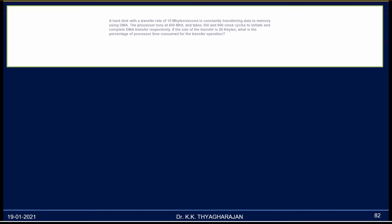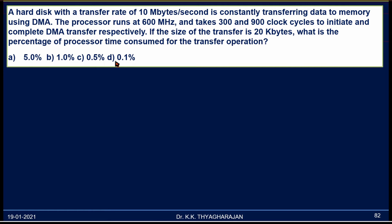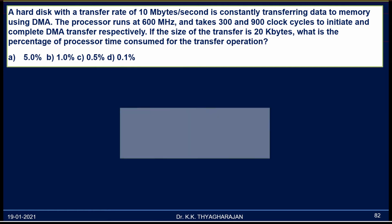Now let us see a problem. A hard disk with a transfer rate of 10 megabytes per second is constantly transferring data to memory using DMA. The processor runs at 600 megahertz and takes 300 and 900 clock cycles to initiate and complete the DMA transfer respectively. If the size of the transfer is 20 kilobytes, what is the percentage of processor time consumed for the transfer operation? The options are 5%, 1%, 0.5%, and 0.1%.